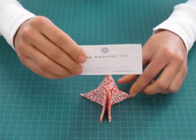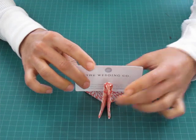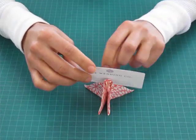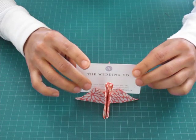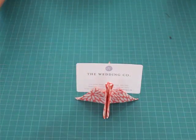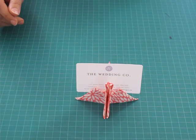Take your place card holder up. Slide it in. And it goes in behind and push it down ever so slightly. And there you have it. Your crane place card holder. Enjoy!